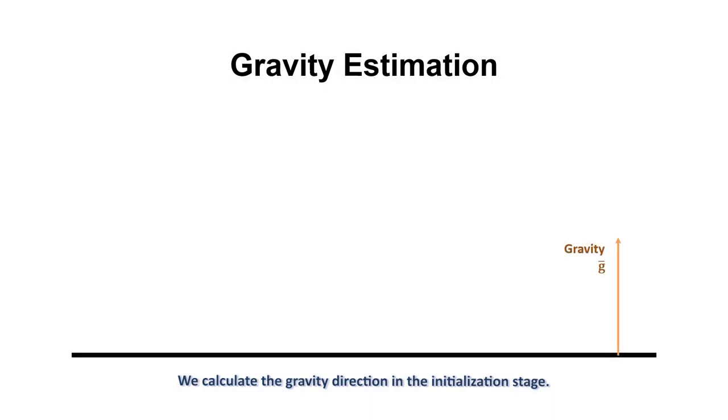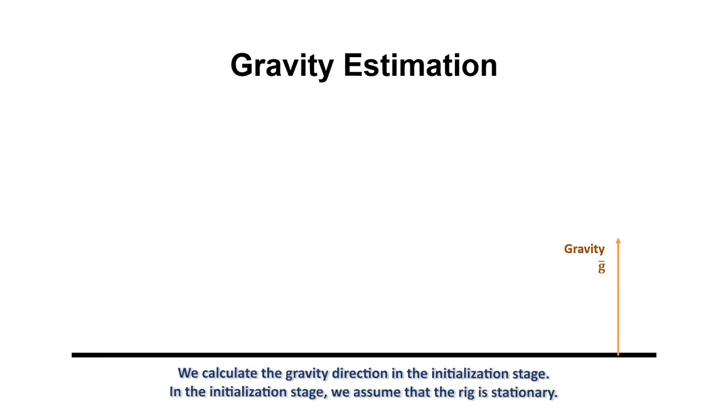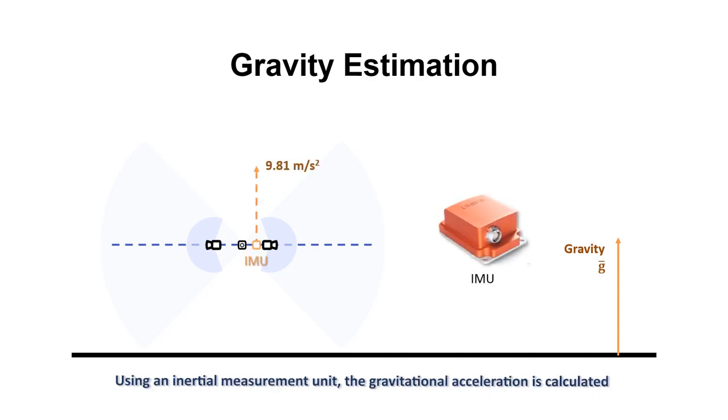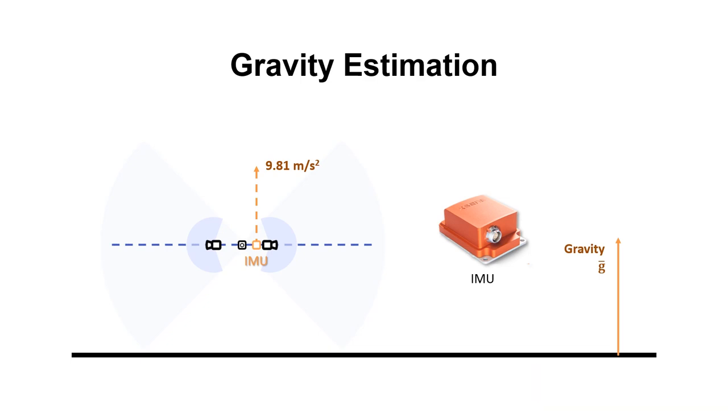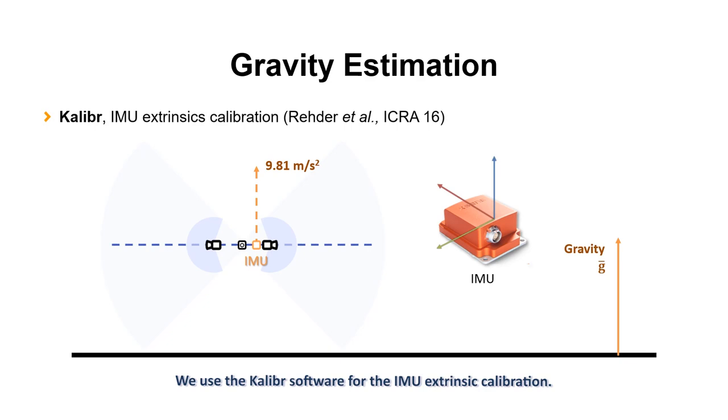We calculate the gravity direction in the initialization stage. In the initialization stage, we assume that the rig is stationary. Using an inertial measurement unit, the gravitational acceleration is calculated by taking average of the accelerometer values accumulated for a short period of time. We use the Kalibr software for the IMU extrinsic calibration.